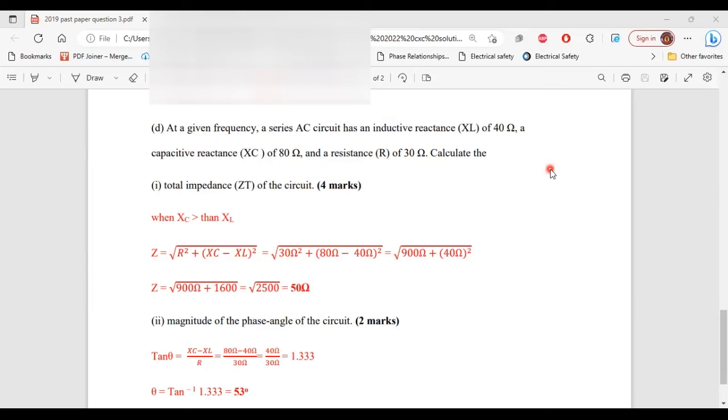So let's move on to part D. It says at a given frequency, a series AC circuit has an inductive reactance XL of 40 ohm, a capacitive reactance XC of 80 ohm, and a resistance of 30 ohm. Calculate the total impedance of the circuit. Now, before we can calculate the total impedance, the first thing that we have to do is to determine which of the reactances is greater. So looking at what is given, we can see that the capacitive reactance is greater than the inductive reactance.